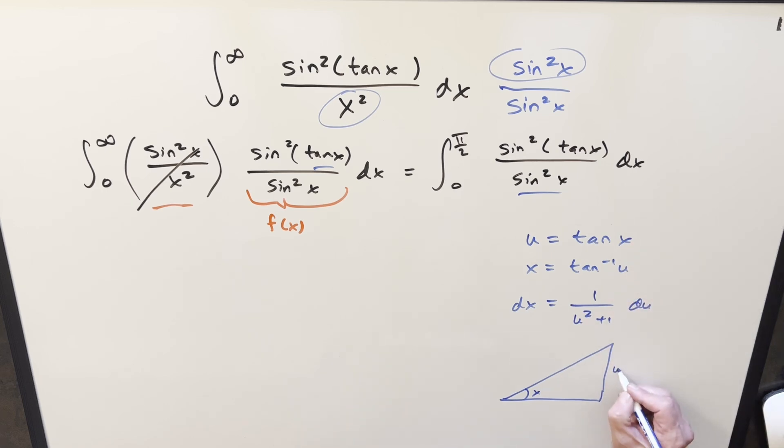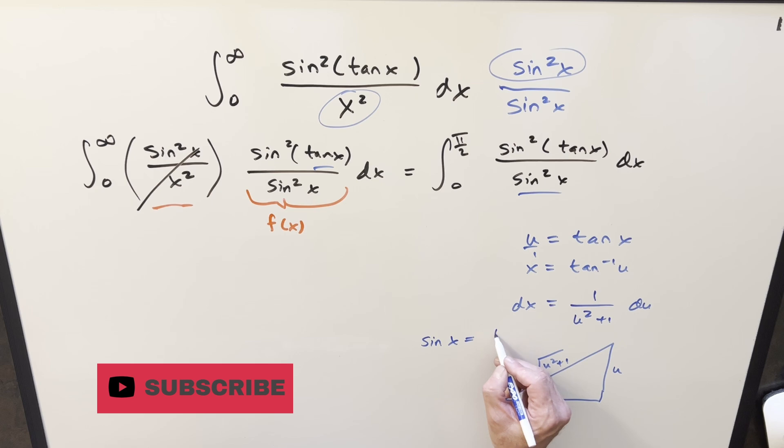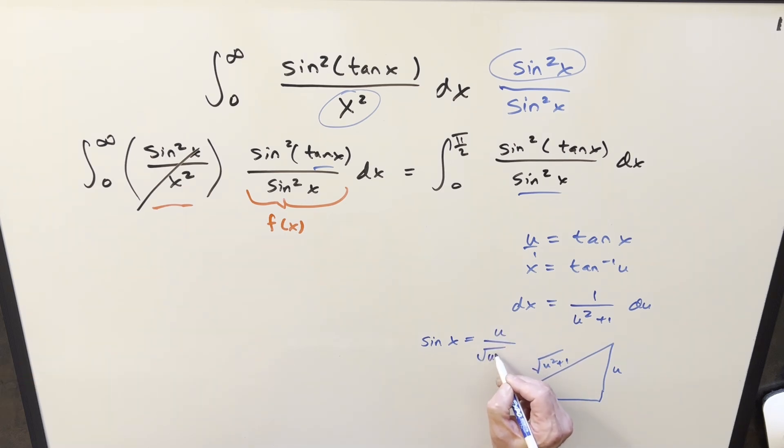So here, tan x is going to be, drawing our triangle, think of this like u over one. Pythagorean theorem allows me to get the third side, which is just u squared plus one. Now we know our sine value, it's just opposite over hypotenuse, which is u over square root u squared plus one.